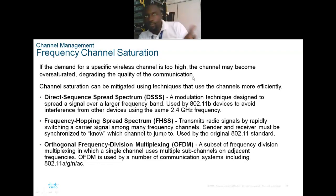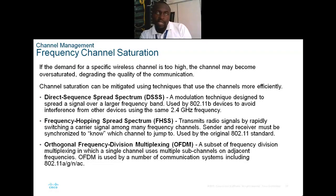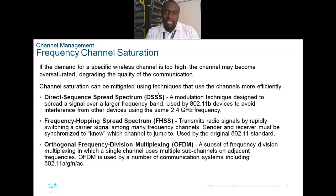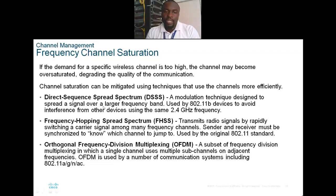We have different channels from 1 to 11 or more. The three most common non-overlapping ones are channel 1, channel 6, and channel 11. If your devices are on channel 1 and channel 2, there will be interference. Channel saturation can be mitigated using Direct Sequence Spread Spectrum, which is a modulation technique designed to spread the signal over a larger frequency band, used by 802.11b and g devices to avoid interference.